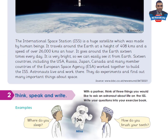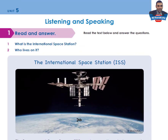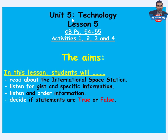What are the aims of this lesson? Unit 5 Technology, Lesson 5, Classbook pages 54 and 55, Activities 1, 2, 3, and 4. In this lesson, students will read about the International Space Station, listen for gist and specific information, listen and order information, and decide if statements are true or false. Let's go to page 54 of your classbook.